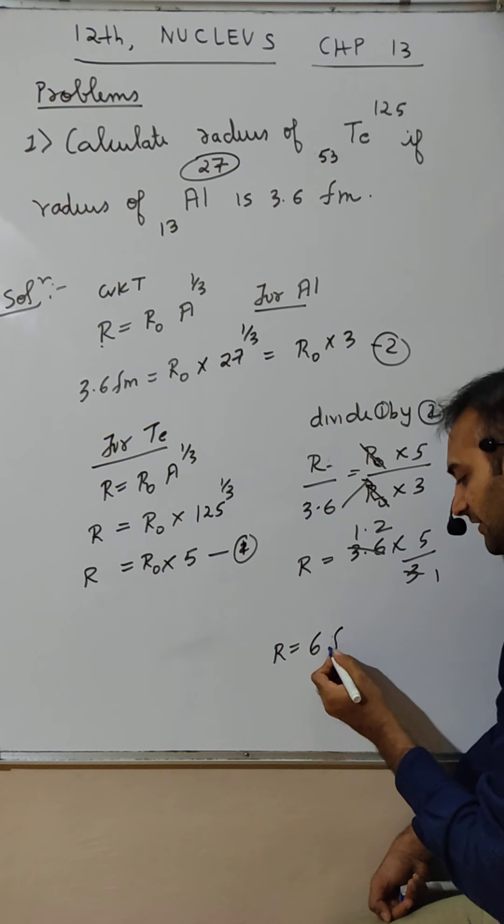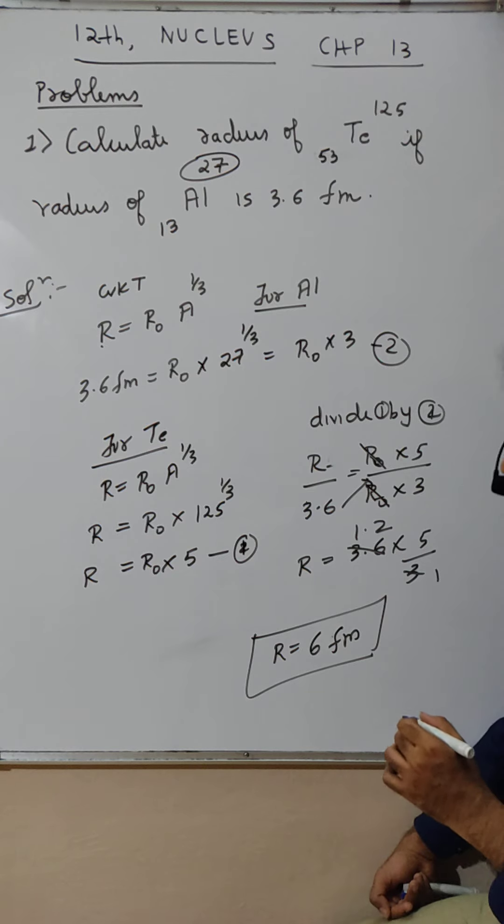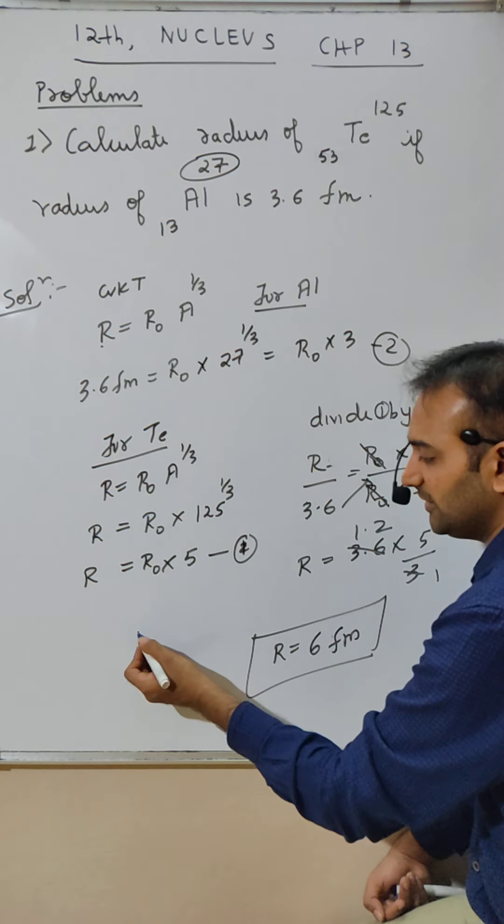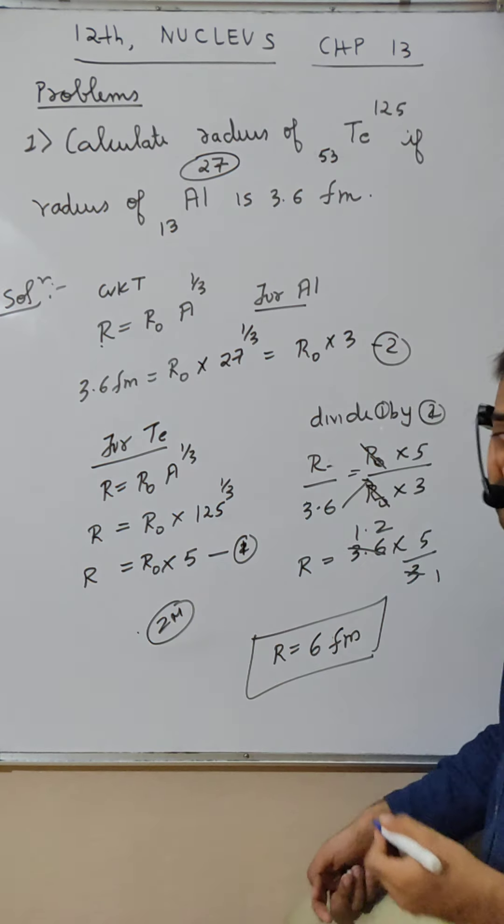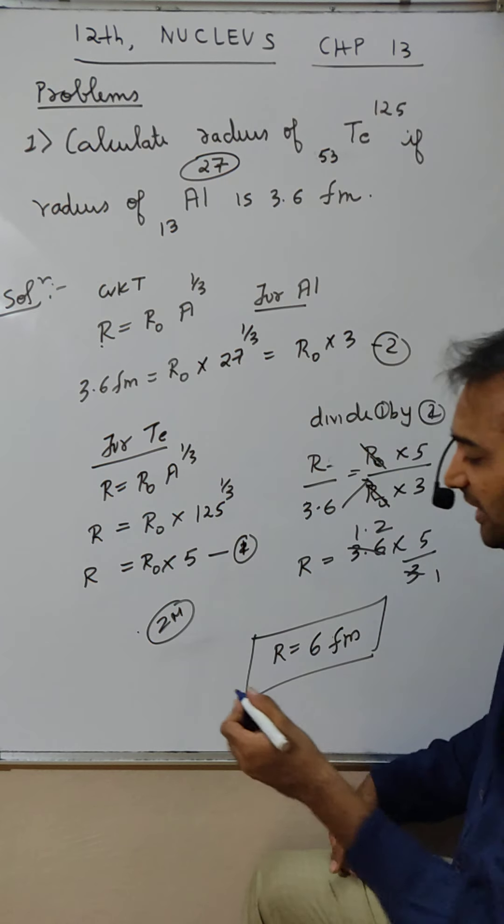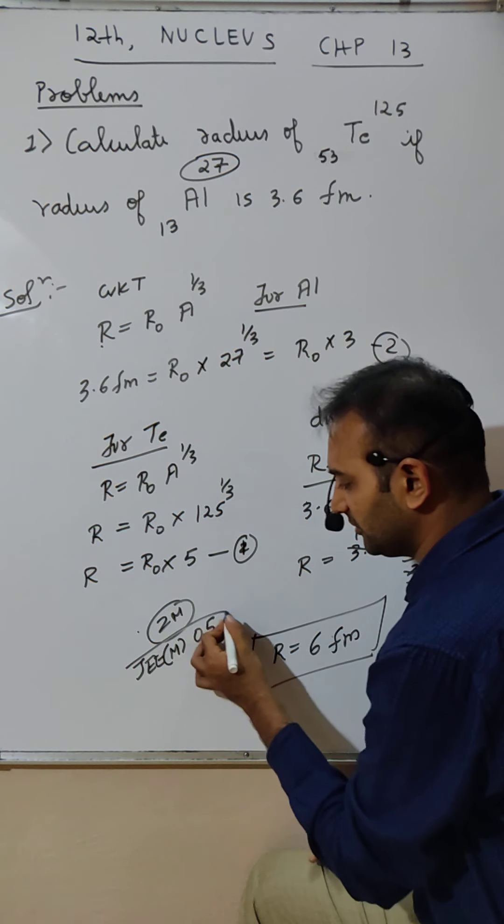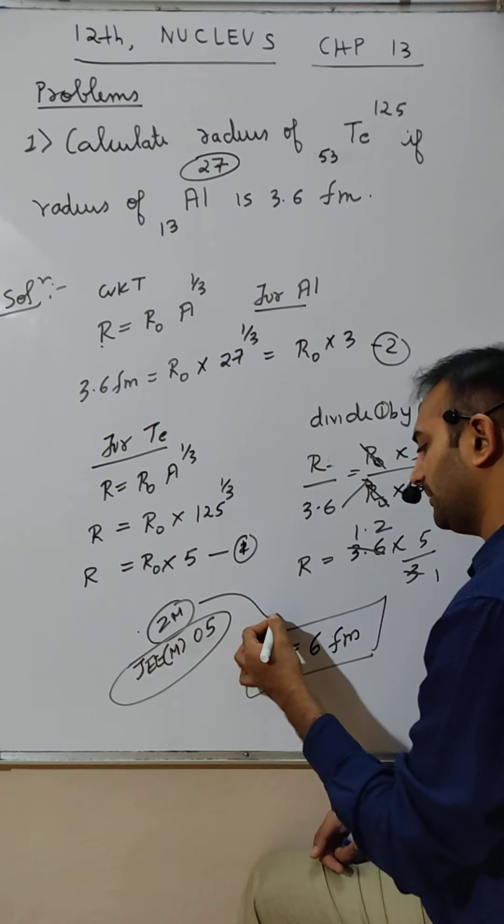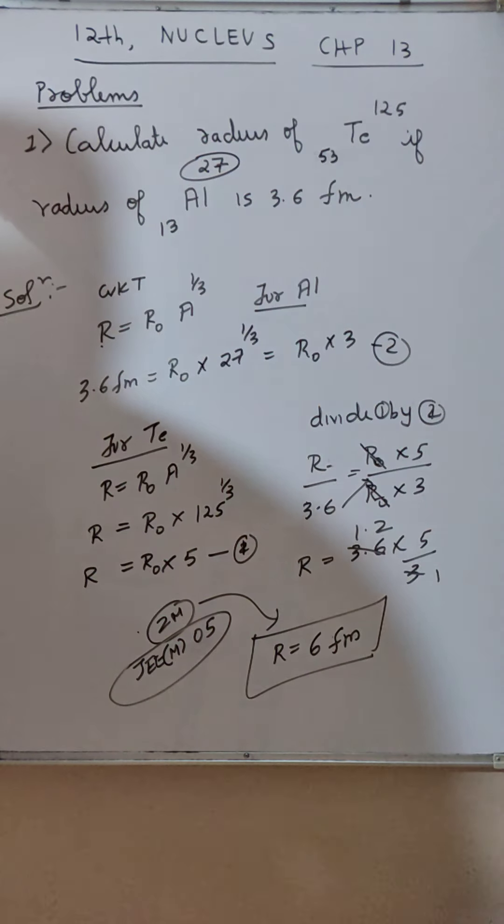So R is equal to 5 times 1.2 is 6. 6 fm. So I got radius as 6 fm. This is actually a 2 mark theory question in our board exam, and this question was asked in JEE Mains 2005. This is a 2 mark typical theory question in our annual exam board.